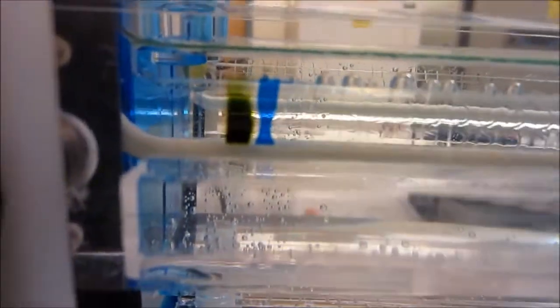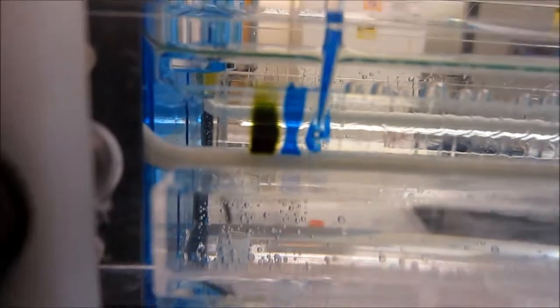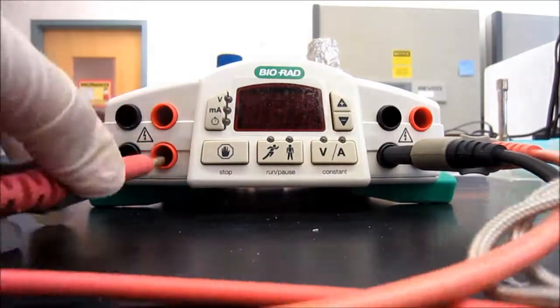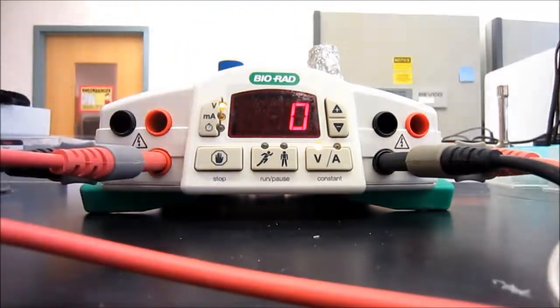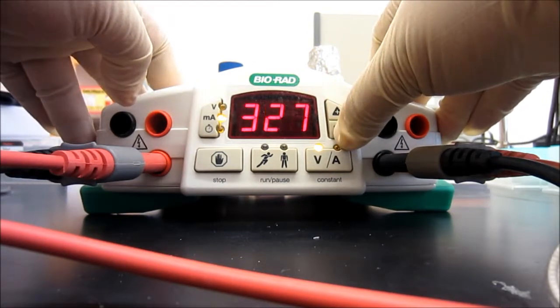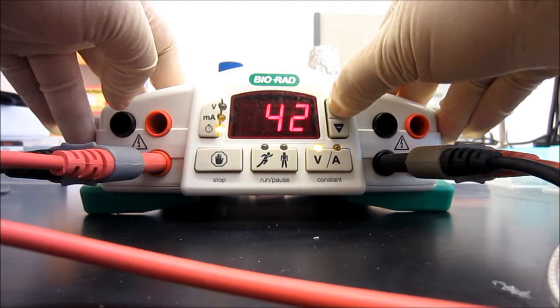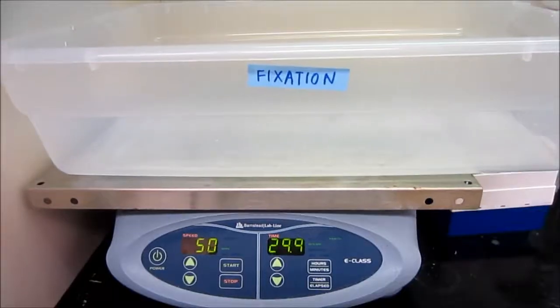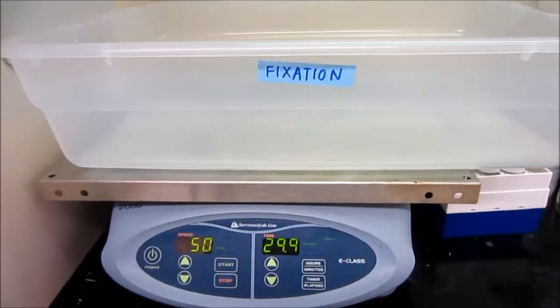20 microliters of PCR product is filled in each well. The electrophoresis condition is set to 180V and run for 2 hours. After running the electrophoresis for 2 hours, the gel is now ready to be stained.